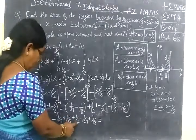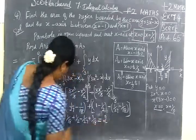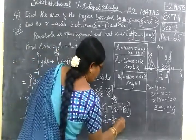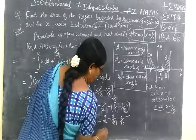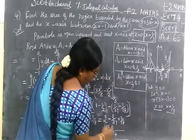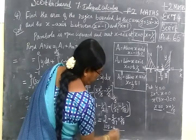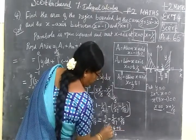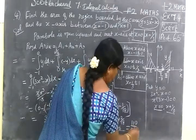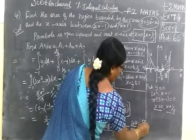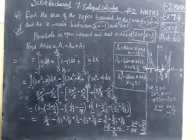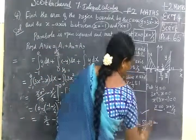So 110 by 54, and cancelling gives 55 by 27. So the final answer is 55 by 27 square units. We verified this answer is correct.